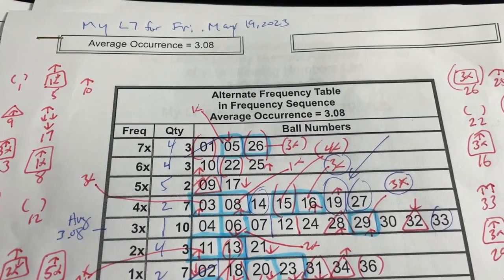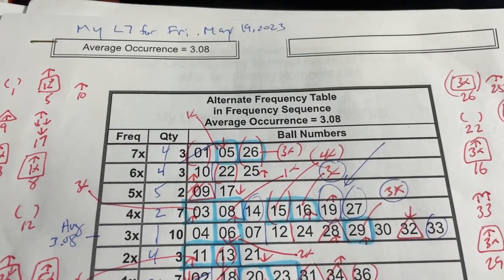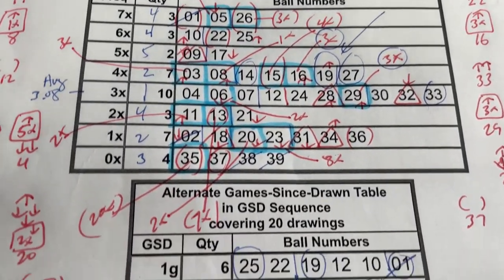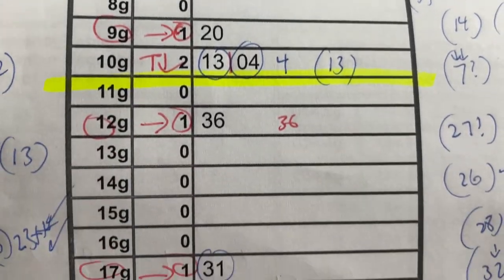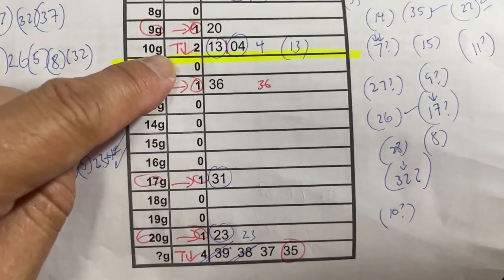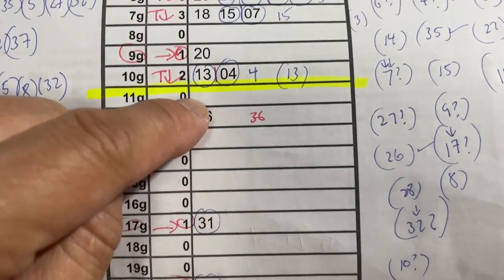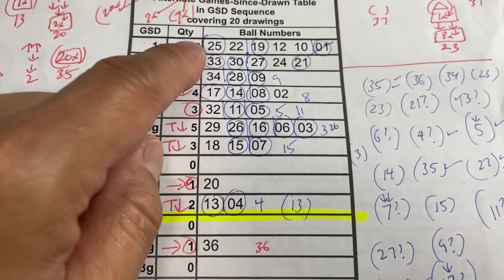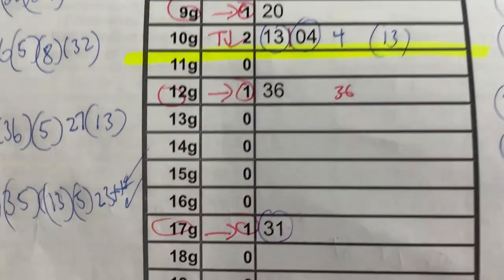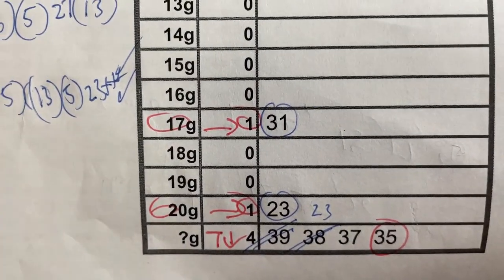You're looking at my Lotto 7 worksheet for May 19th. I've been working very hard trying to find the best numbers for us. Anything below this yellow line are cold numbers, and anything above it are warm to hot numbers. I usually choose at least one cold number. I've got several.